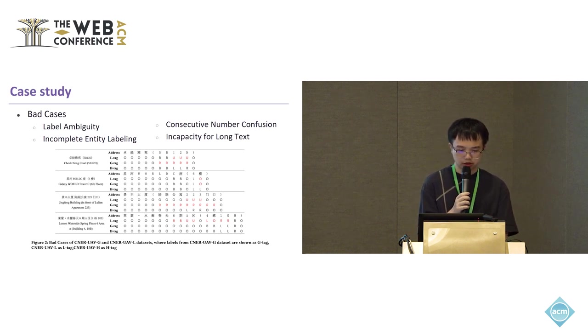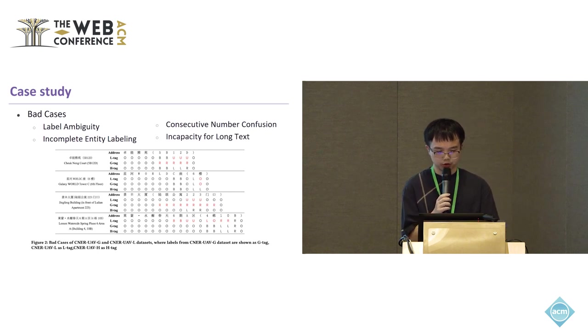The third is consecutive number confusion. When consecutive numbers are entered, large language models face challenges in correctly distinguishing between floor and room numbers. For example, they may fail to recognize the first two in "223" as a level tag. In contrast, human annotation effortlessly avoids such issues. The last problem is incapability for long text. Compared with GPT-3.5, the ChatGLM model exhibits a significant decline in its ability to parse Chinese long-text addresses. This aligns with our experimental findings. To summarize, large language models excel with singular and standard address information but fall short with semantically rich and syntactically flexible addresses. Enhancing large language models' Chinese comprehension capability is a promising research avenue.